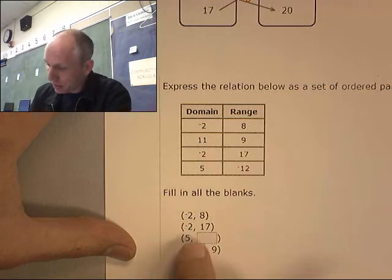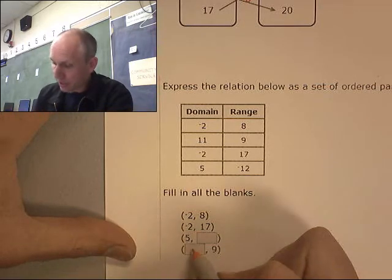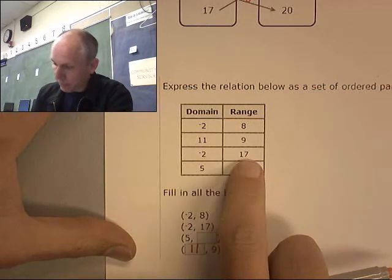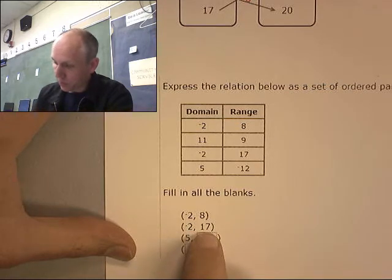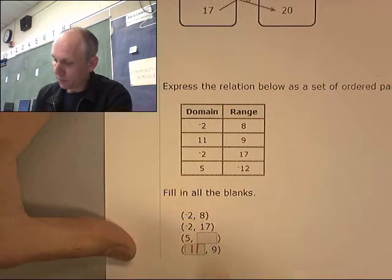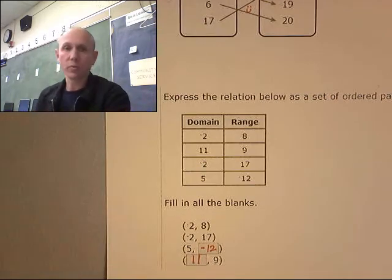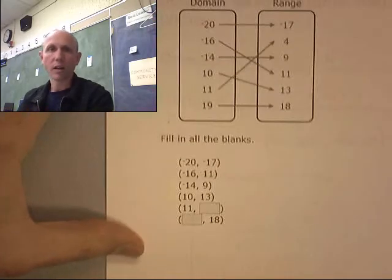This is 11, 9. Oh, you know what? That's this one right here. This is the 11, 9. Let's fill that in. Negative 2, 17. Well, there's negative 2, 17. 5, negative 12. 5, negative 12.